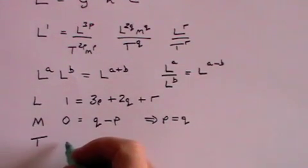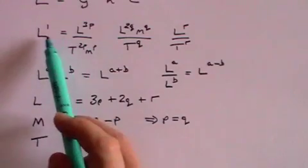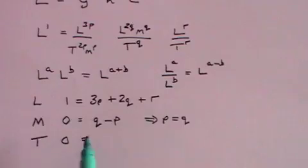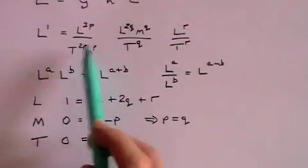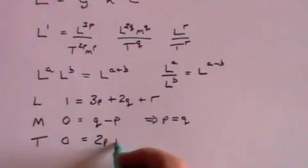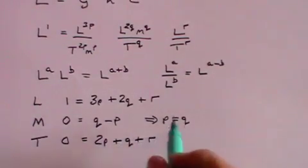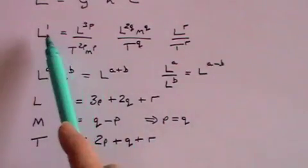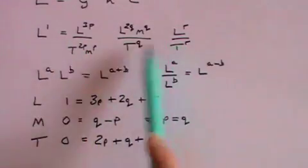Finally, if we look at time, again there is no time term on this side of the equation, so 0 equals minus 2p minus q plus r, and that has to be true if this is going to be dimensionally correct.